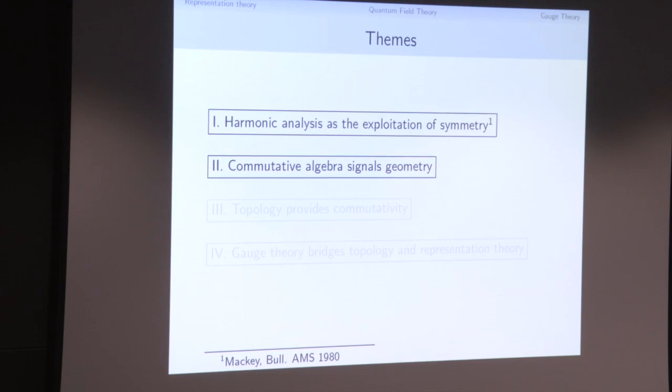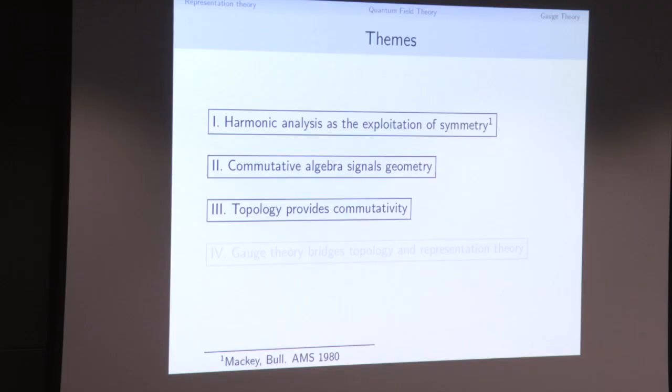I'd like to explore Mackey's theme throughout today's talk, guided by three other themes. The second theme is commutative algebra signals geometry — associated with Grothendieck and Serre. The idea is that whenever you see a commutative ring, you should think there's a space behind it: find a geometric realization, the spectrum of the ring, and realize the ring as commutative regular functions on that space. This gives us a way of translating problems in algebra — for example, understanding modules of a ring — into problems in geometry, such as studying vector bundles or sheaves on that space.